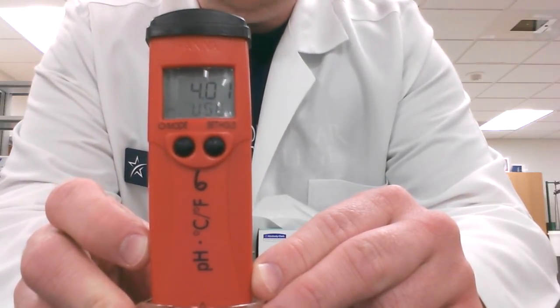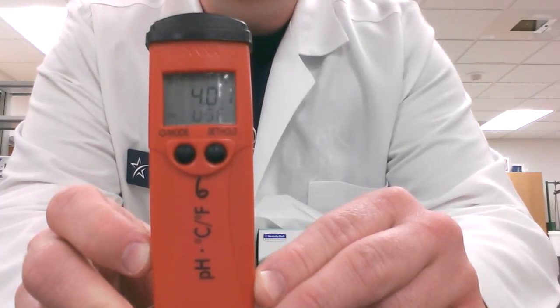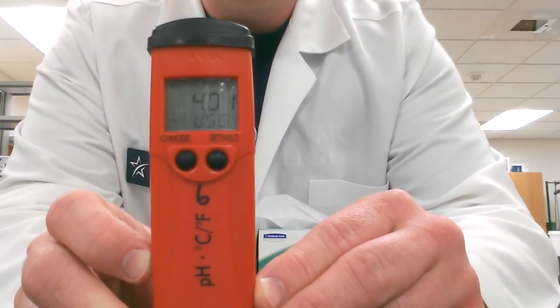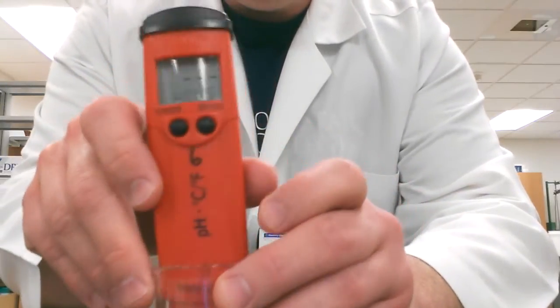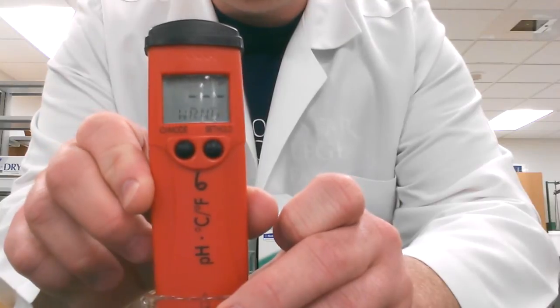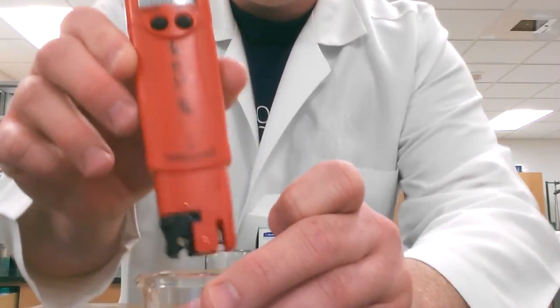After it's done calibrating using this pH 7 solution, it's going to tell you to change it to the pH 4 solution. So it's telling me I'm wrong right now because it's saying to put it in the 4, but it's still in the 7. So we're going to take it out of the 7 solution.